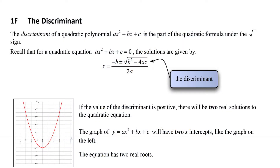Hi there everyone. Today we're going to be looking at the discriminant, which is the part of the quadratic formula that helps us to know how many roots a quadratic equation has. It's this part right here, b squared minus 4ac. That is what we call the discriminant, and it's going to tell us if a quadratic equation has two solutions, one solution, or no solutions at all.